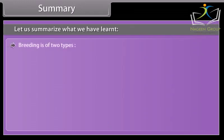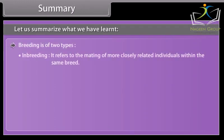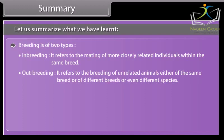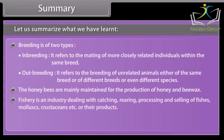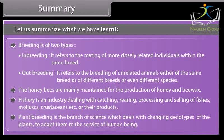Breeding is of two types: inbreeding, which refers to the mating of more closely related individuals within the same breed, and outbreeding, which refers to the breeding of unrelated animals either of the same breed, different breeds, or even different species. Honeybees are mainly maintained for the production of honey and beeswax. Fisheries is an industry dealing with catching, rearing, processing, and selling of fishes, mollusks, crustaceans, etc. Plant breeding is the branch of science which deals with changing genotypes of plants to adapt them to the service of human beings.